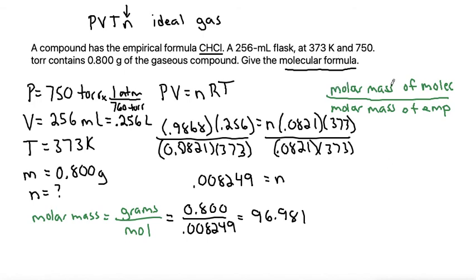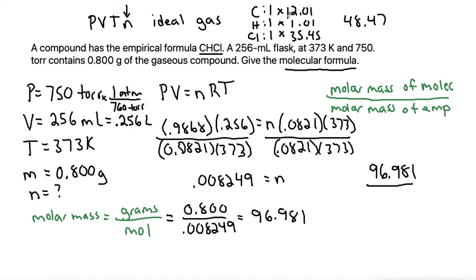This is the molar mass of the actual compound, which has a molecular formula. That would be the molar mass of the molecular formula on top, the 96.98. The denominator is the molar mass of the empirical formula, which we can find by there is 1 carbon, which is 12.01, 1 H which is 1.01 each, and 1 Cl which is 35.45. These numbers come from the periodic table, which sums to be 12.01 plus 1.01 plus 35.45 is 48.47. That's the molar mass of the empirical formula.